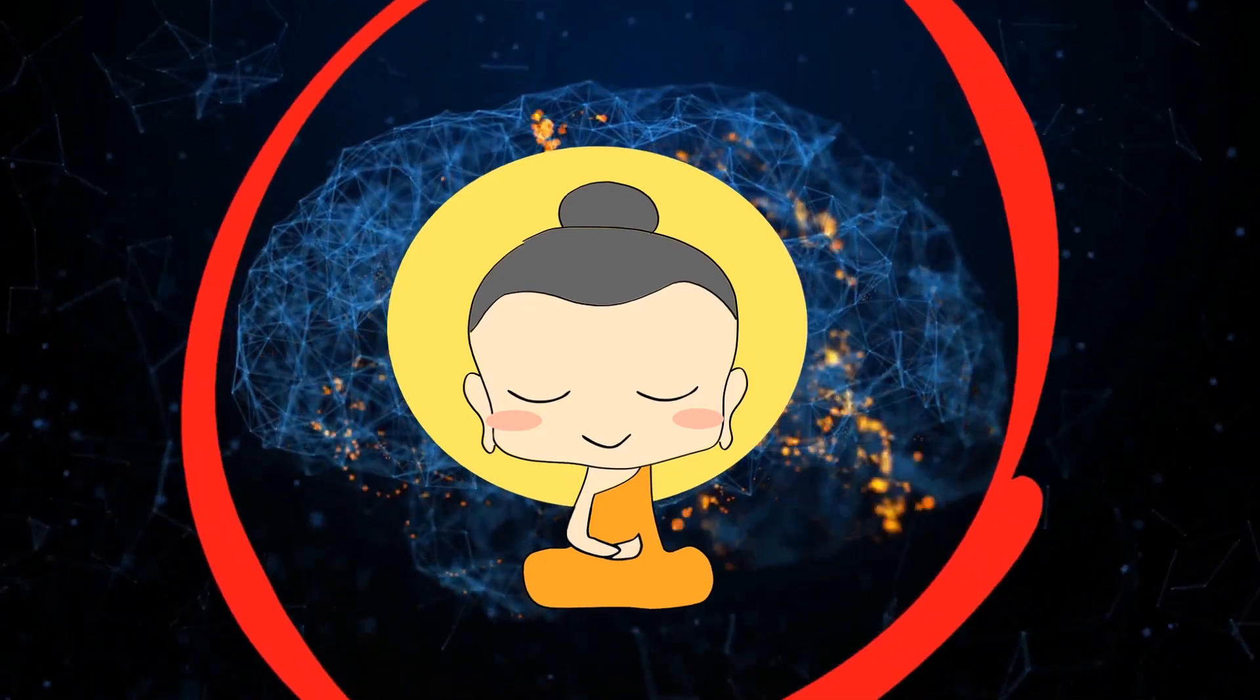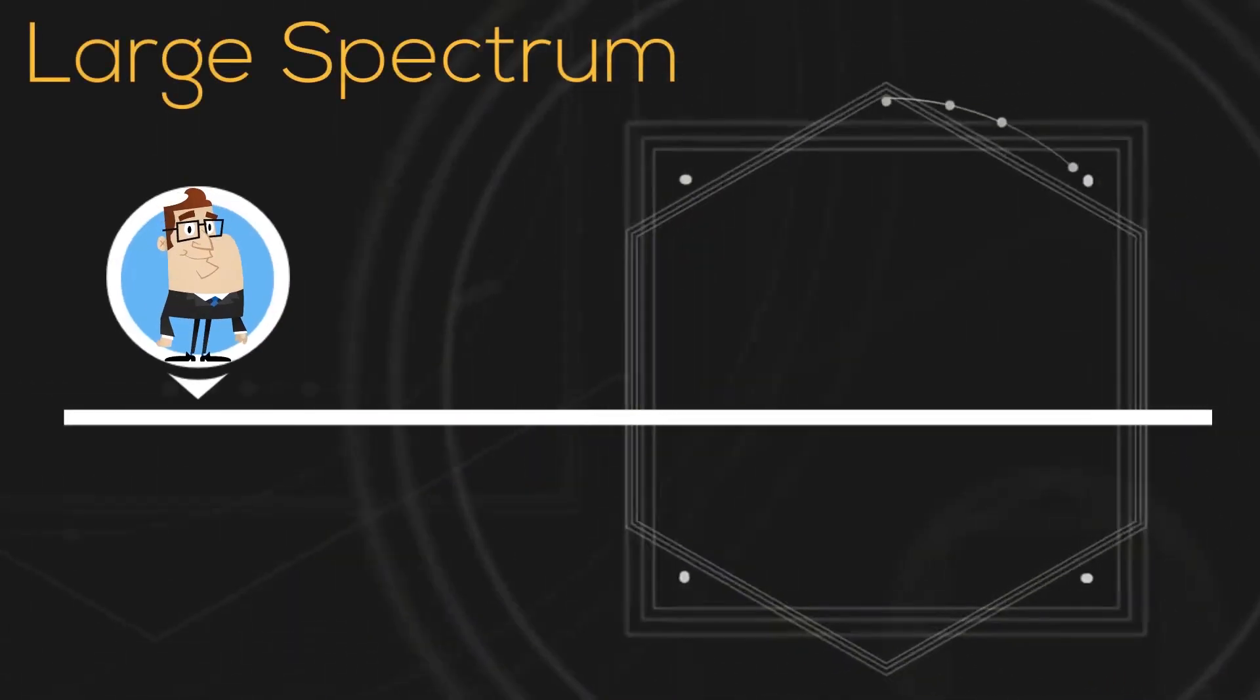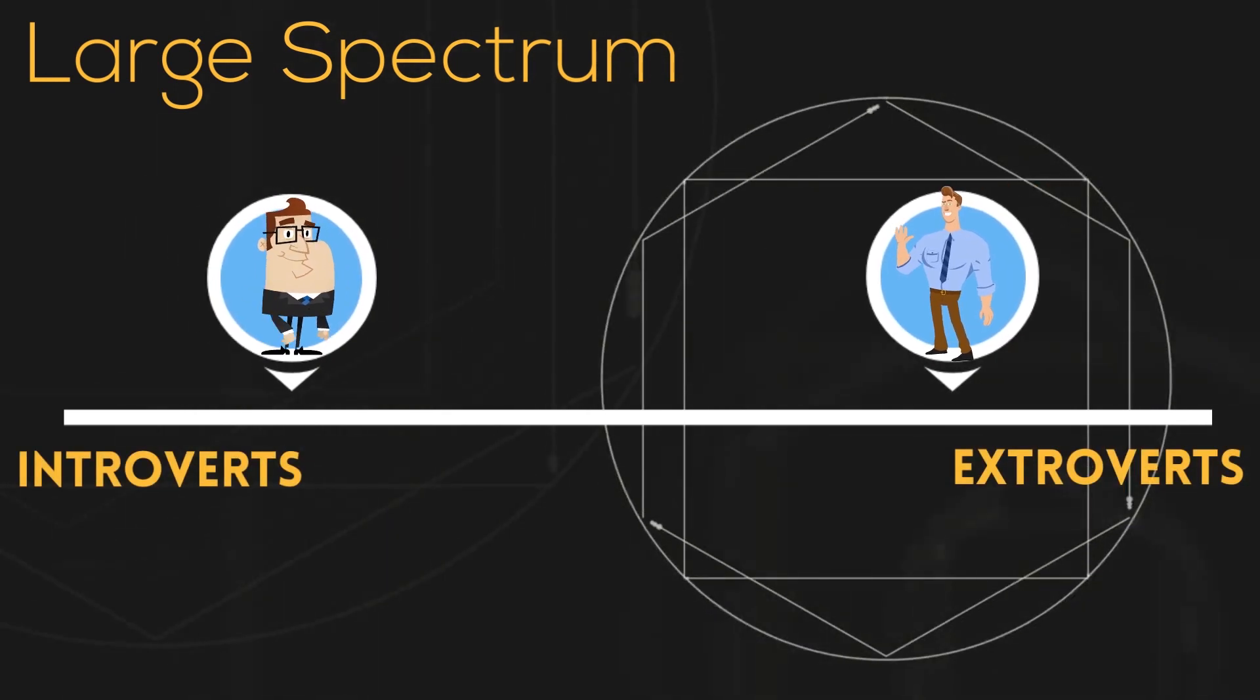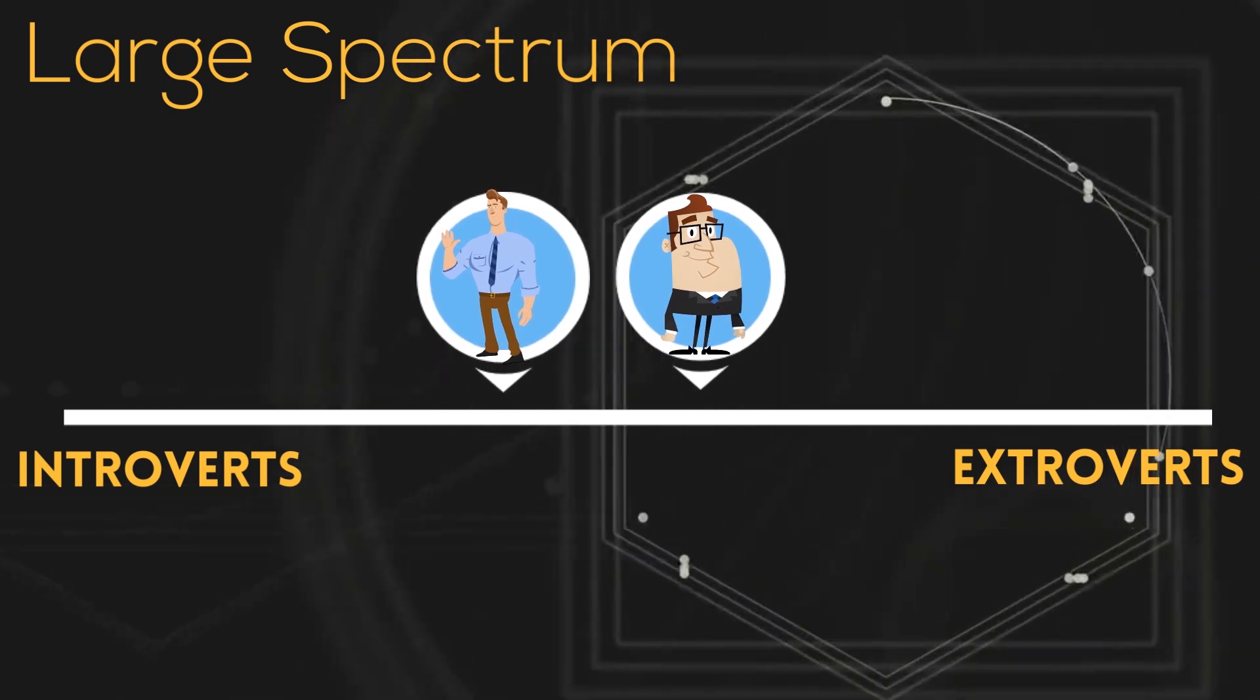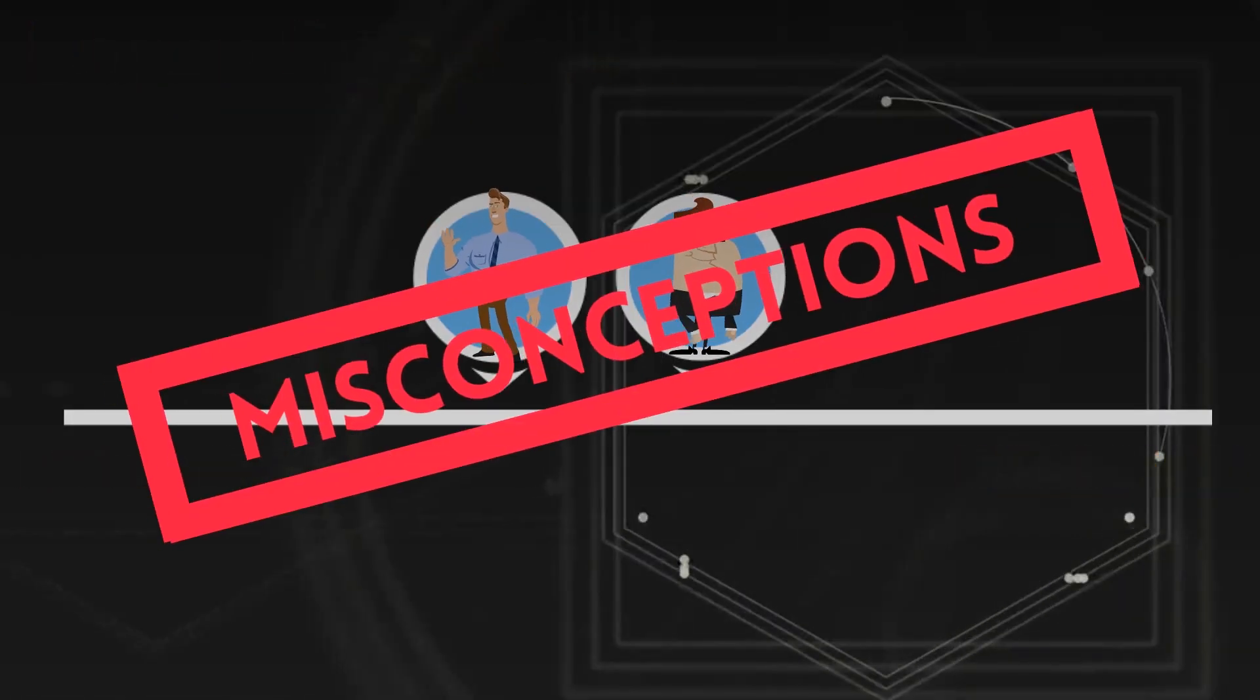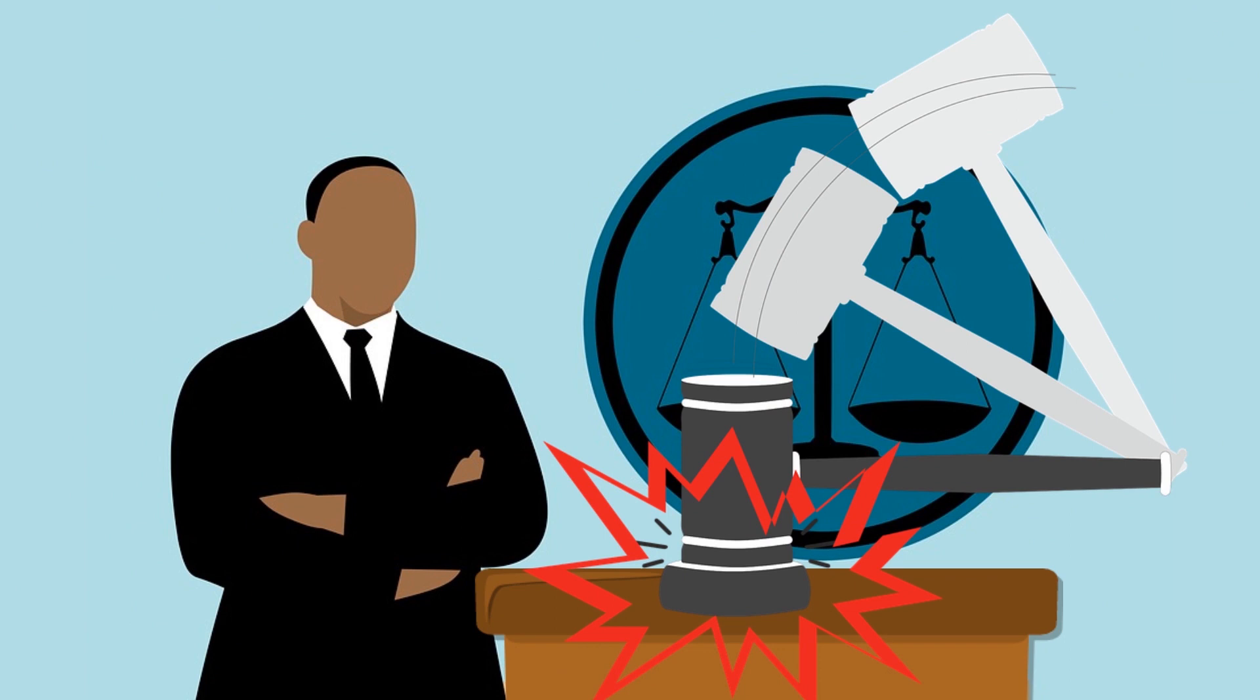In reality, introversion and extroversion exist as a large spectrum that is difficult to clearly define and overlap with each other a lot. Today, we're going to be looking at some of the most common misconceptions about introverts and why we shouldn't be so quick to judge.